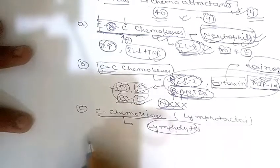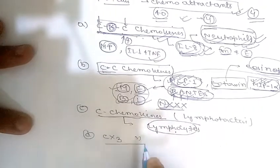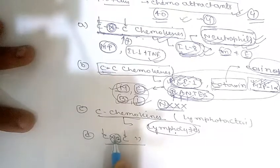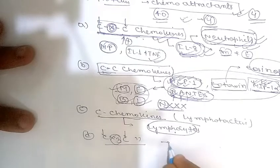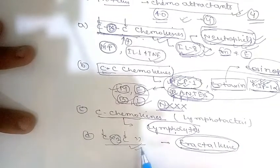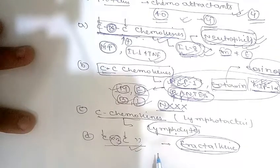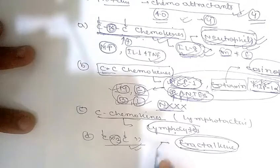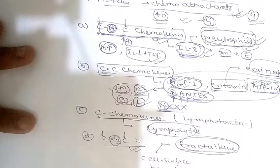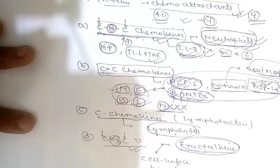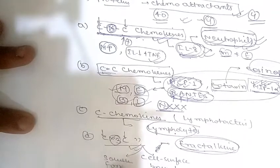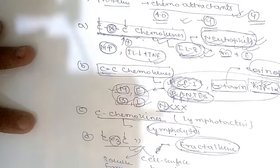The fourth class is CX3C chemokines, which contain three amino acids between the two cysteine residues. The only known member of this class is fractalkine. This chemokine exists in two forms: a cell surface-bound protein, which is induced on endothelial cells by inflammatory cytokines and promotes strong adhesion of monocytes and T cells.